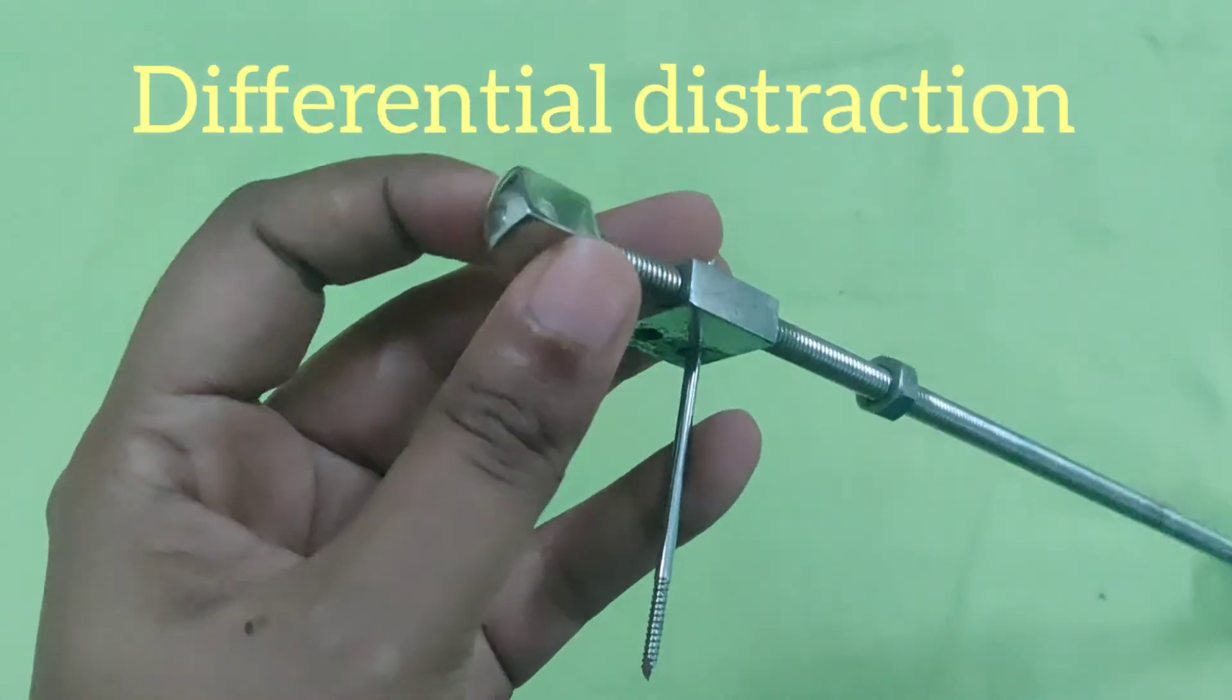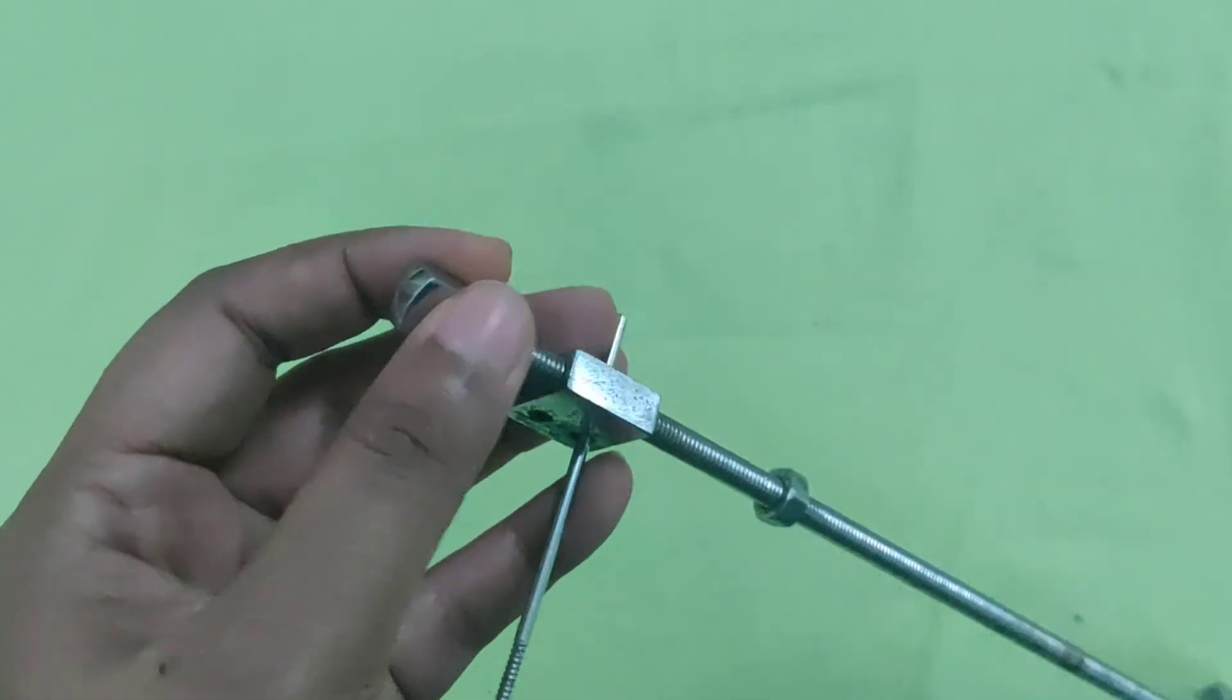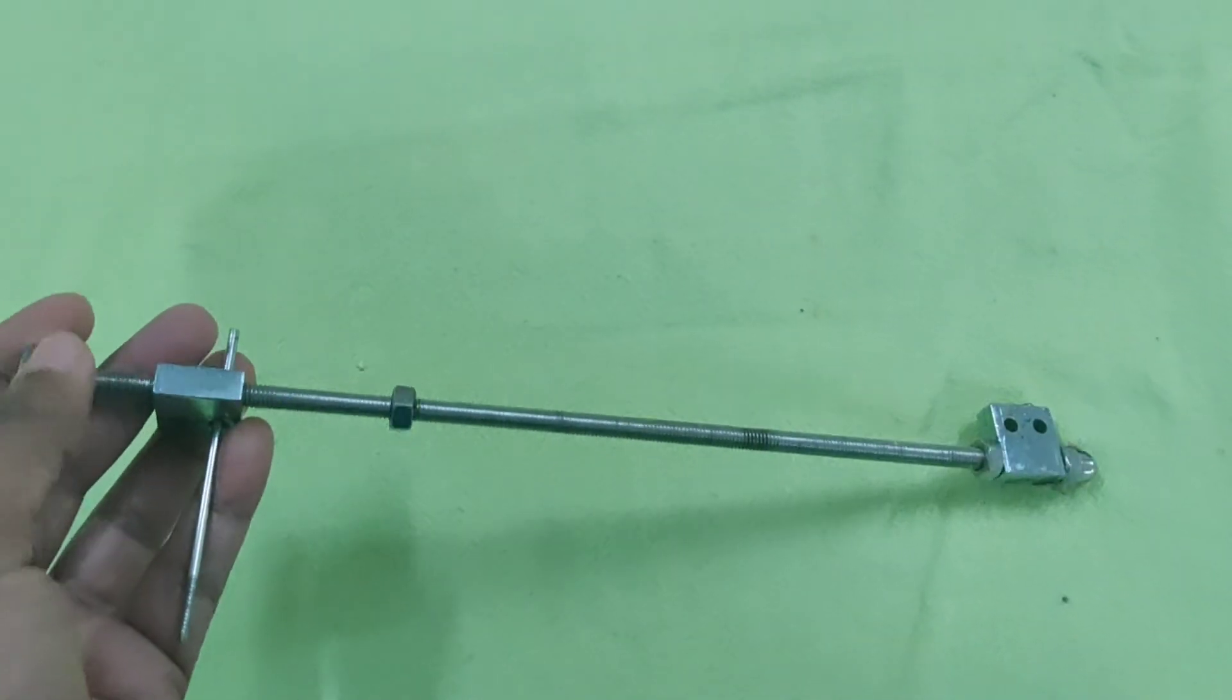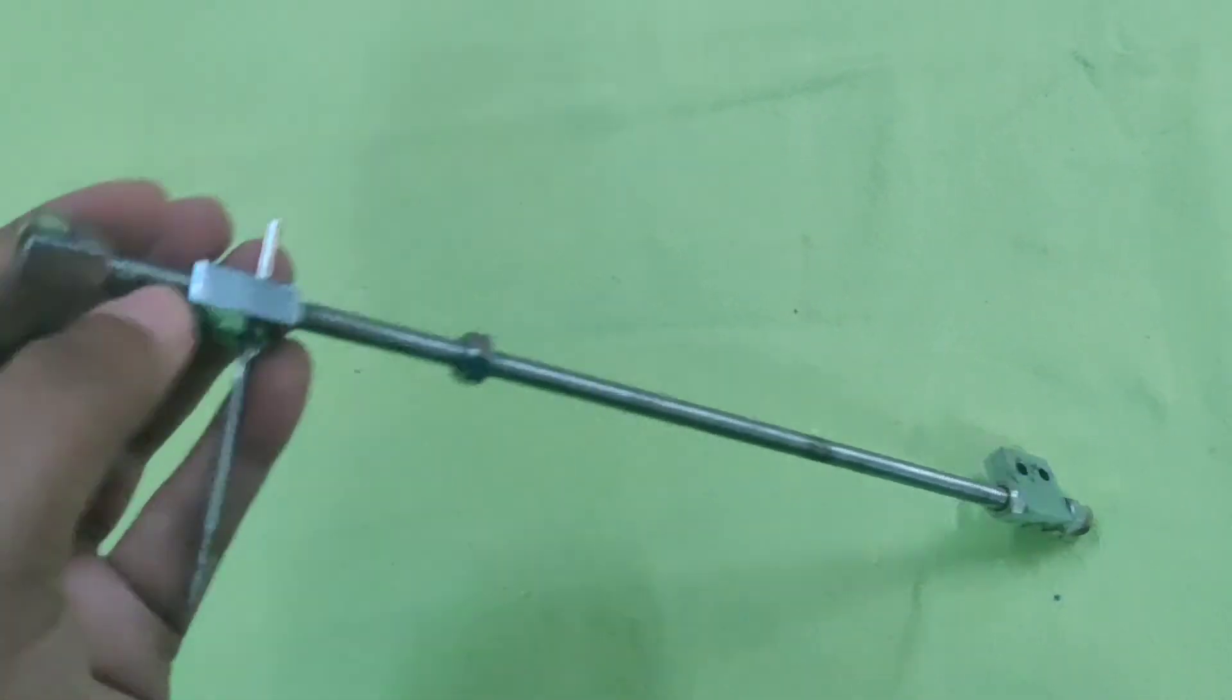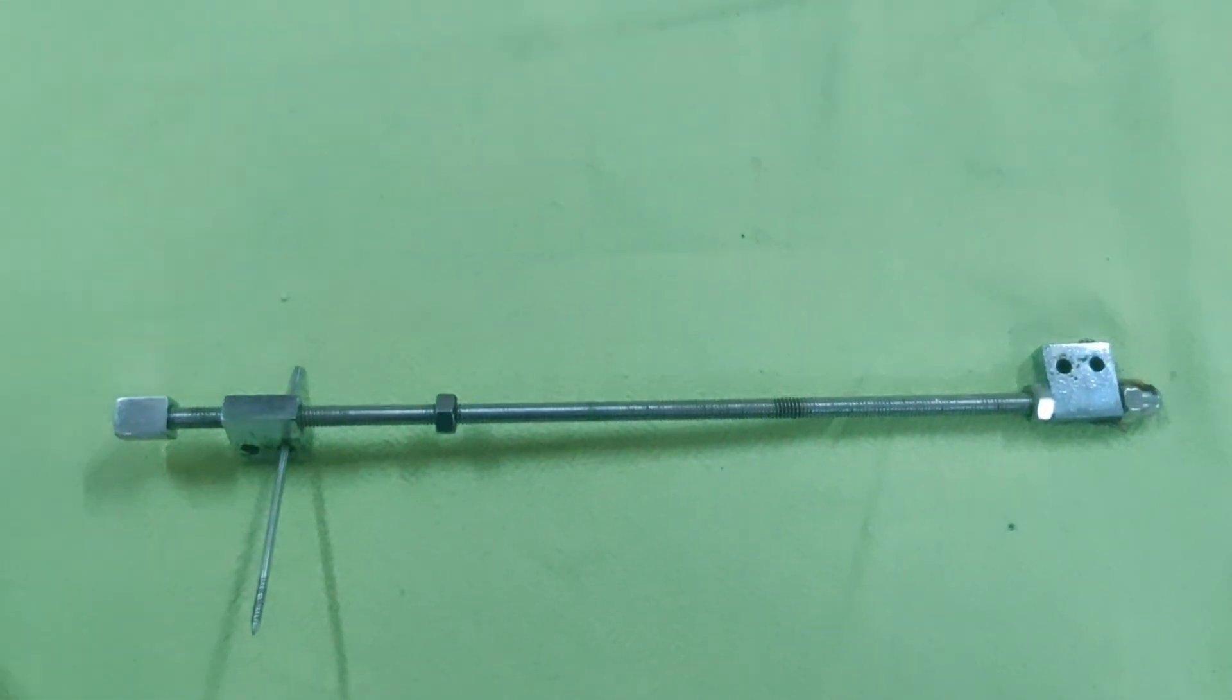So what is differential distraction? Here the concave side of the deformity will be distracted twice the rate of the convex side. So it will prevent the crushing of tissues on the convex side and lengthen the limb and effectively correct the deformity at the same time.